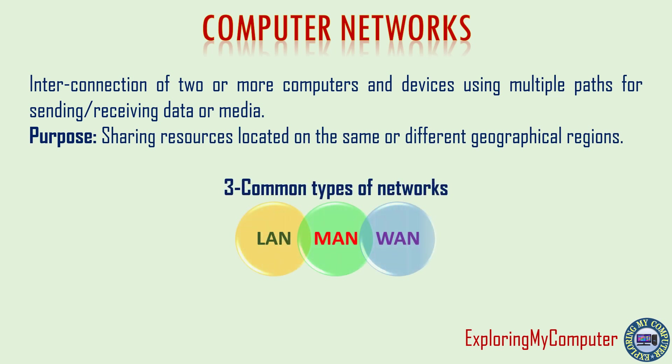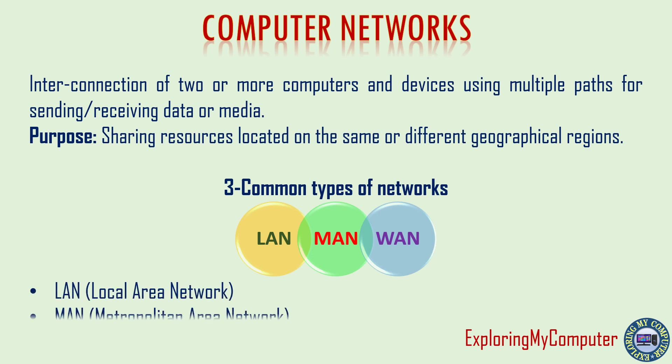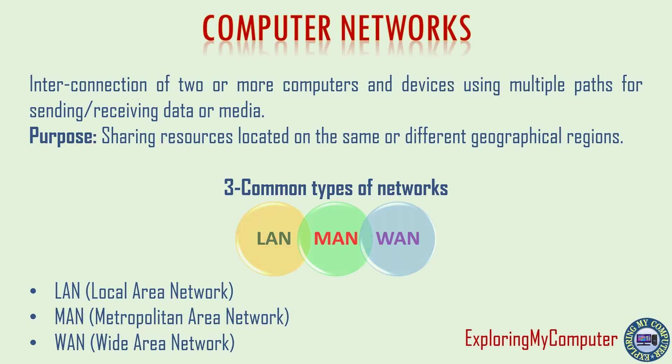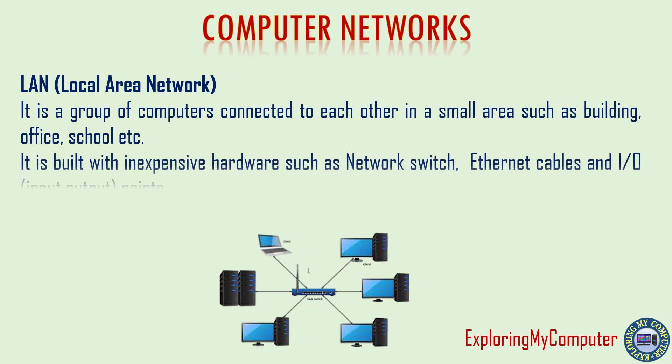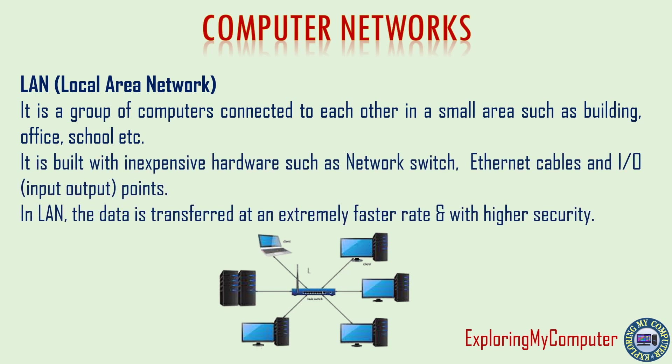Three common types of networks: LAN, Local Area Network. It is a group of computers connected to each other in a small area such as a building, office, or school. It is built with inexpensive hardware such as network switches, ethernet cables, and I/O points. In LAN, data is transferred at an extremely faster rate and with higher security.